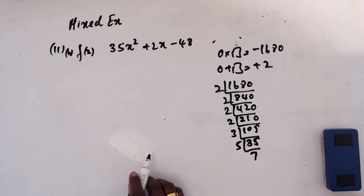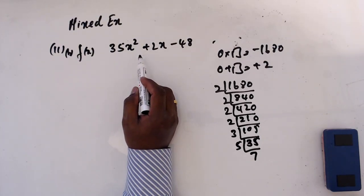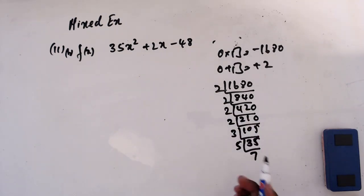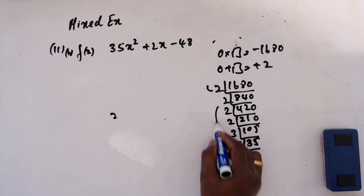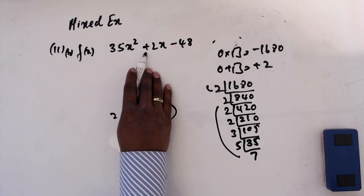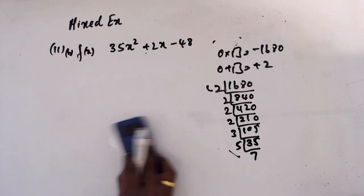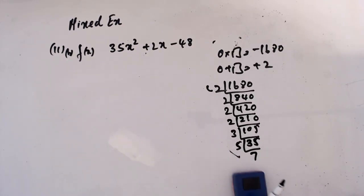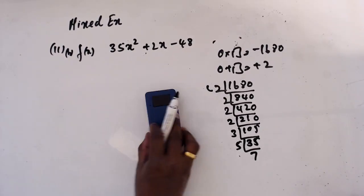We look at combinations where the difference should be plus 2, meaning it has to be balanced — two numbers together. So if you take 2 and other numbers, we can't get that plus 2. We need two numbers very close together.